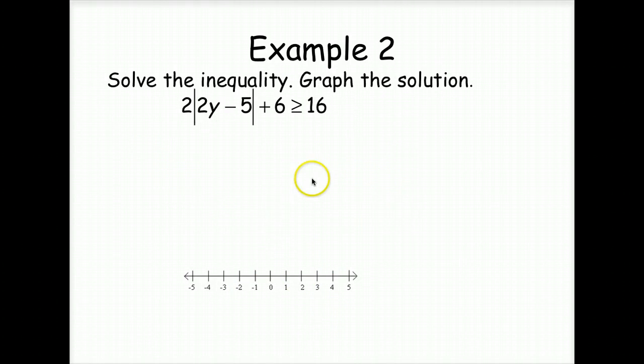All right, this one we have to do some extra steps. We've got to isolate this absolute value. So we're going to start by subtracting six from both sides. Then we're going to divide both sides by two. Now we can set it up where it's greater than or equal to five, less than or equal to negative five.